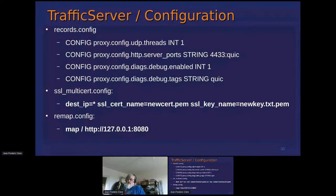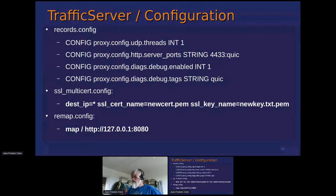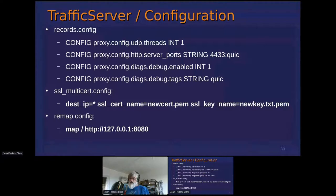To configure traffic server for H3: you tell it to use UDP, create one UDP thread to receive UDP packets, configure the port and the protocol — QUIC — which means it's going to use one version of the H3 protocol. You configure the certificate and key in the multiset. Since traffic server is a proxy, you remap it to your local Tomcat.